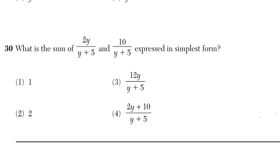We want the sum of 2y over y plus 5 and 10 over y plus 5, and we want it in simplest form. If we want the sum of them, we can just add them up.